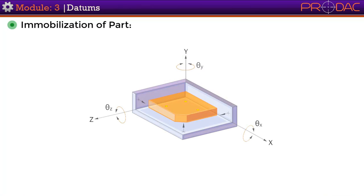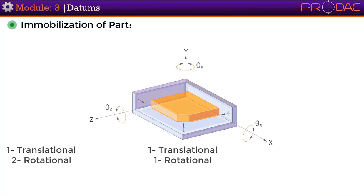the primary datum feature sits flat with a minimum of three points of contact that are not in a straight line. The secondary datum feature is pushed up against a second plane of the datum reference frame with a minimum of two points of contact. It eliminates two degrees of freedom, one translational and one rotational.